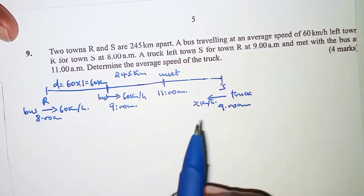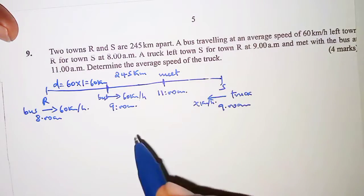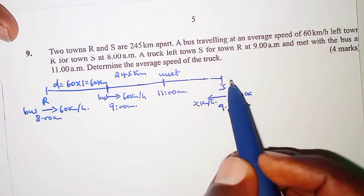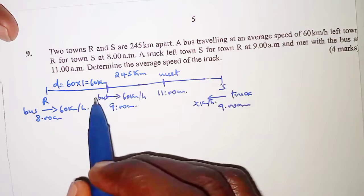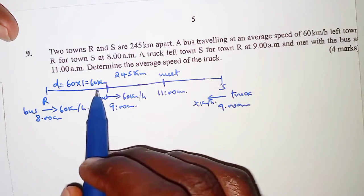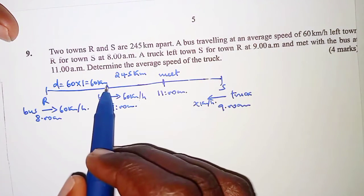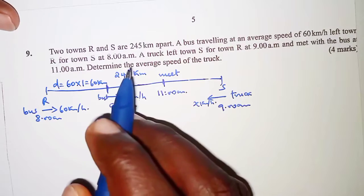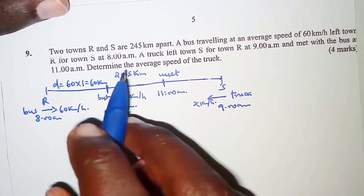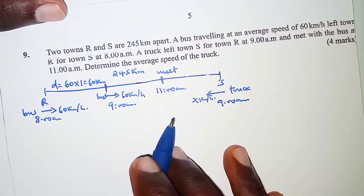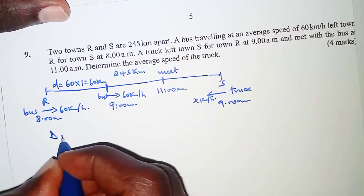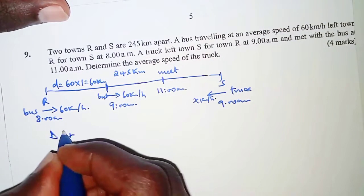So that is the distance the bus had covered in one hour before the truck left town S. At that particular point, the remaining distance between the bus and the truck is 245 minus 60 kilometers, which equals 185 kilometers. That is the distance shared between them.